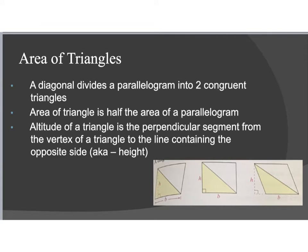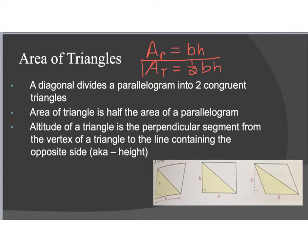So if we know how to find the area of a parallelogram, then we should be able to find the area of a triangle, because we know that the triangle is going to be half of that. The area of a parallelogram was equal to base times height. When we look at the area of a triangle, we take our parallelogram's base times height and divide it by two, or multiply by one half. So the area of a triangle is one half times the base times the height.